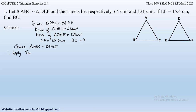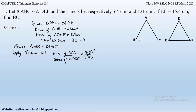Since triangle ABC is similar to triangle DEF, applying theorem 2.6: area of triangle ABC divided by area of triangle DEF equals the square of the ratio of corresponding sides — AB/DE whole squared, which equals BC/EF whole squared, which also equals AC/DF whole squared.